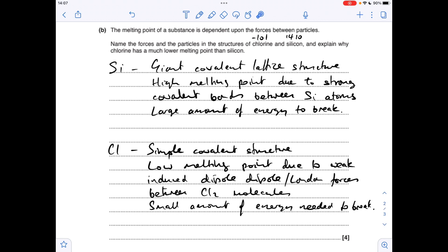In the case of chlorine, we've got a simple covalent structure—you could say a simple molecular structure there. We've got that low melting point, minus 101, due to the weak induced dipole-dipole, or London forces you could call them, between Cl2 molecules. Remember, chlorine forms a diatomic molecule. So only a small amount of energy is needed to break those.